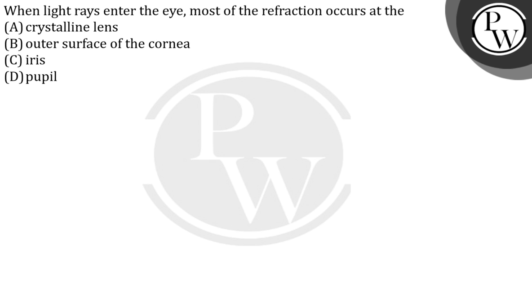The outer surface is where this refraction takes place. So the correct answer will be option number B — the outer surface of the cornea. Thank you.